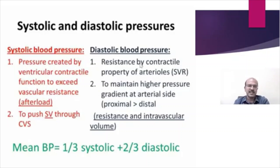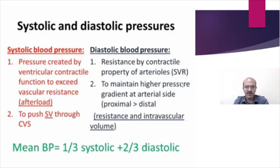The diastolic blood pressure is to maintain the circulation when the heart is not pumping. It is caused by the contractile property of the arterioles, which is also one of the important factors for the systemic vascular resistance. We need to maintain a higher pressure gradient at the arterial side — proximal more than distal — and this is related to the resistance and the intravascular volume.